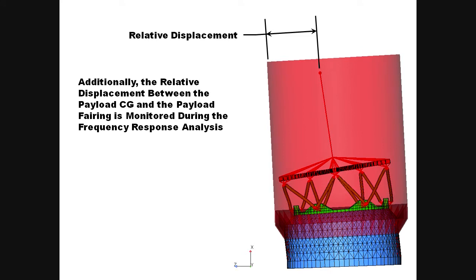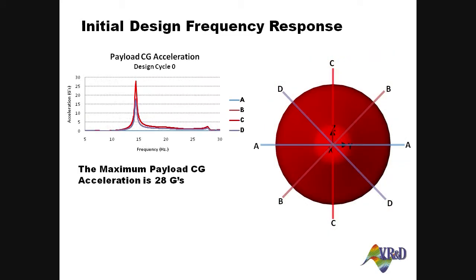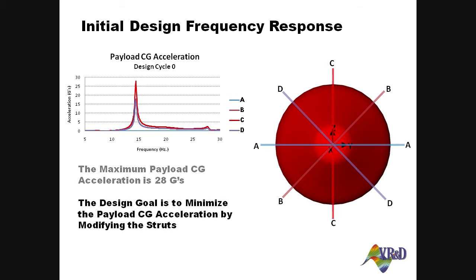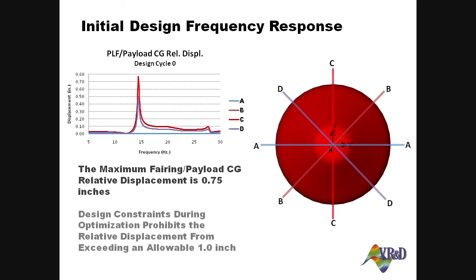As design optimization modifies the structure, it is important that the rattle space or relative displacement requirement is not exceeded. The initial model exhibits a lateral payload CG acceleration of roughly 28 Gs, and design optimization will reduce this by tuning the struts. The initial design does not exceed the one-inch allowable rattle space between the payload and the fairing.